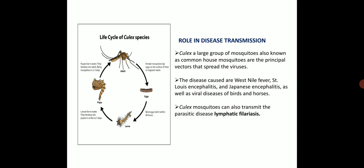Coming to the role in disease transmission, Culex is commonly called the common house mosquito and it will transfer many viruses. The diseases caused are West Nile fever, St. Louis encephalitis, Japanese encephalitis — a viral disease of birds and horses — and they are also able to transmit the parasitic disease that is lymphatic filariasis.